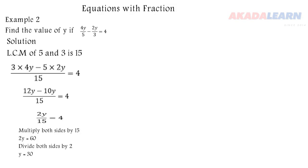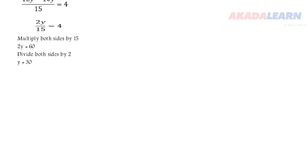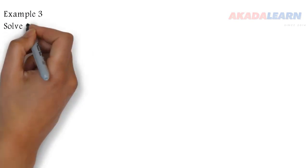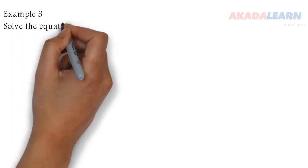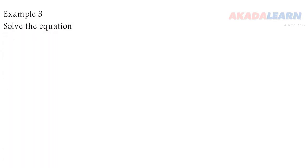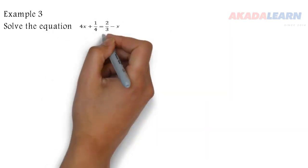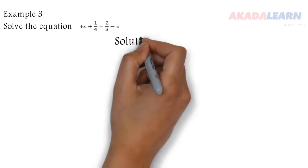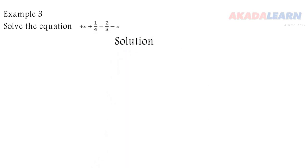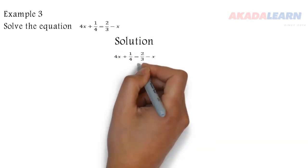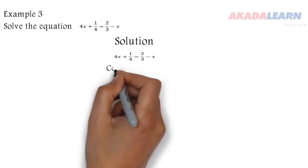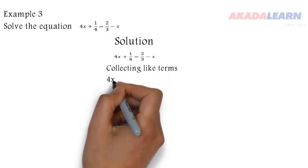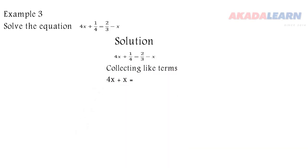Let's see another example. Solve the equation 4x + 1/4 = 2/3 - x. We collect like terms by adding x to both sides and subtracting 1/4 from both sides, so 4x + x = 2/3 - 1/4.